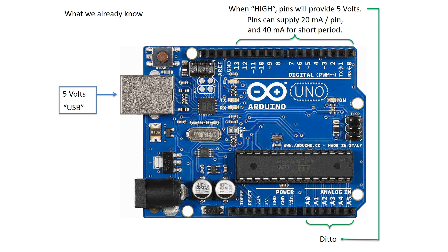Now that we have a basic understanding of power, let's revisit our Arduino board. Up to this point, we understand that we can power our Arduino off our computer's USB plug through the large metal plug on the left. We also know that each of our digital and analog pins can provide up to 5 volts to supply 20 milliamps continuously and up to 40 milliamps for short periods. Now that we know the power equation, another way of thinking about each pin's capability is that they can each provide 100 milliwatts of power, which is the same as 5 volts times 20 milliamps.